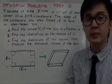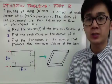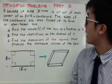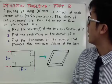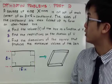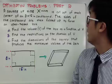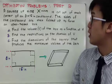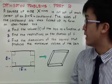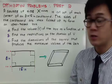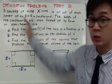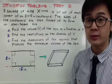This is another way of presenting an optimization problem in calculus. A square of side x inches is cut out of each corner of an 8 by 15 inch cardboard. The sides of the cardboard are then folded up to form an open top box. We will answer the following questions in this word problem using derivatives.